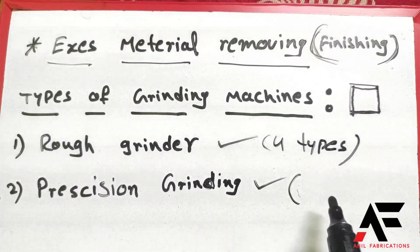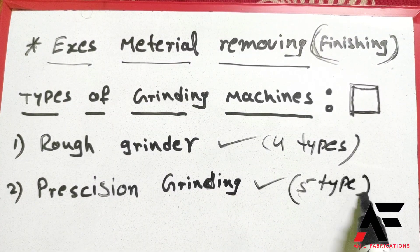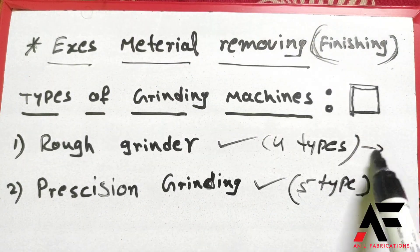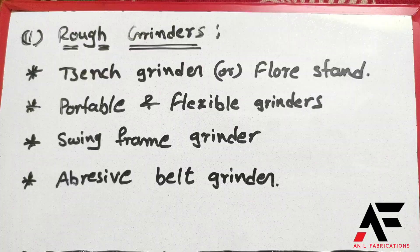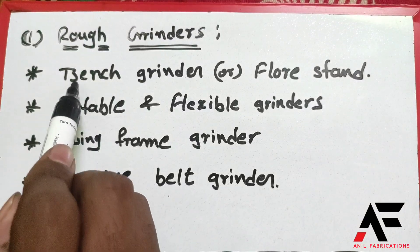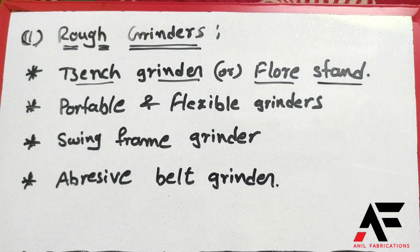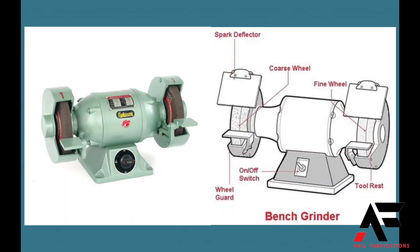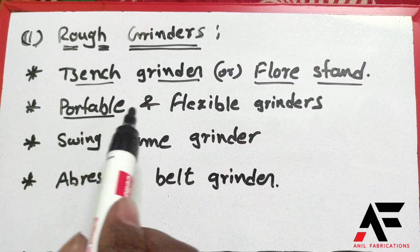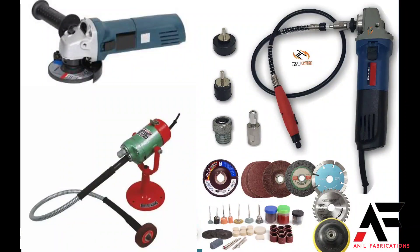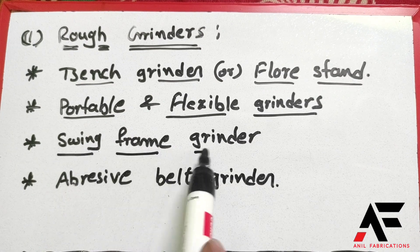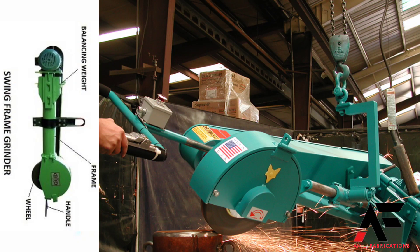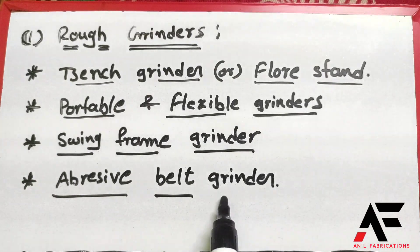Under rough grinders, we have 4 types: 1. Bench Grinder or Floor Stand, 2. Portable and Flexible Grinders, 3. Swing Frame Grinder, 4. Abrasive Belt Grinder.